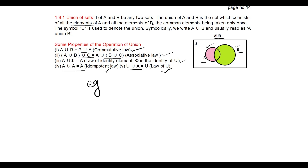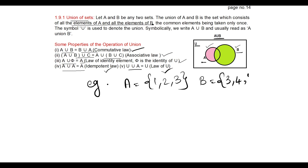Consider an example: let A = {1, 2, 3} and B = {3, 4, 5}. Then A union B = {1, 2, 3, 4, 5}. Note that 3 is repeated in both sets, so we do not repeat it in the result.